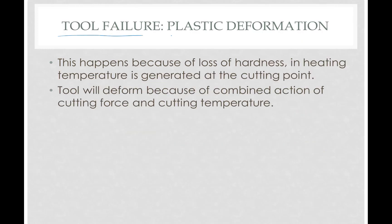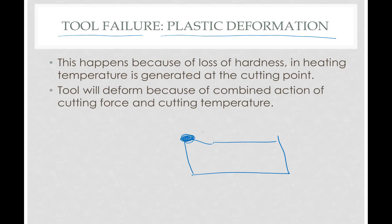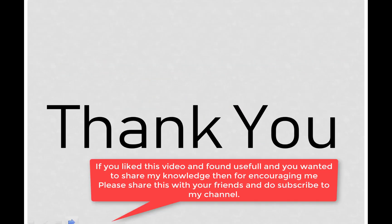The next type of tool failure is plastic deformation of the tool. Suppose this is the tool — the temperature being generated over this area causes it to lose its hardness and turn soft. We call this reduction in hot hardness of the tool. Due to prolonged action of the cutting force, the material will get physically deformed — this deformation occurring in the tool is also an undesired tool failure in the cutting process. Thank you, guys.